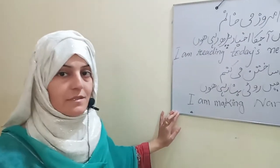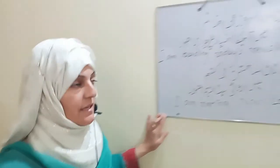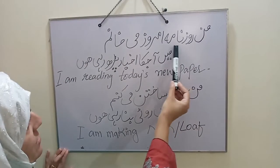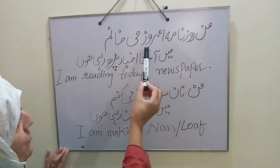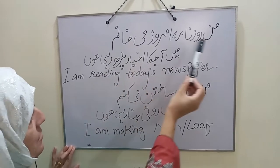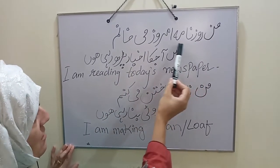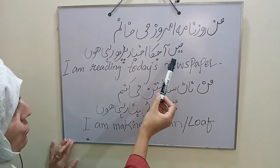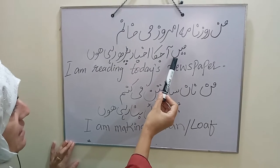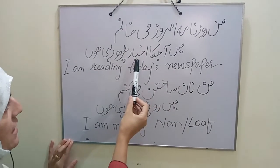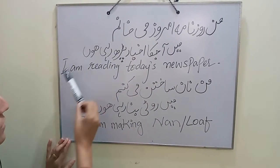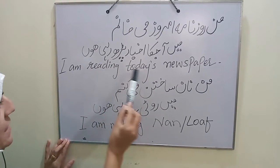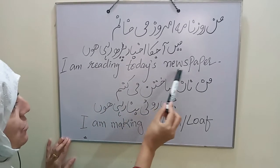Next, the Farsi sentence: man roznamaye emroz mi konam — in Urdu: main aaj ka akhbar parh rahi hoon — and in English: I am reading today's newspaper.